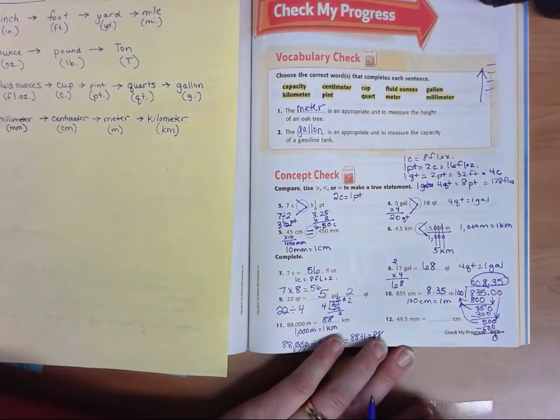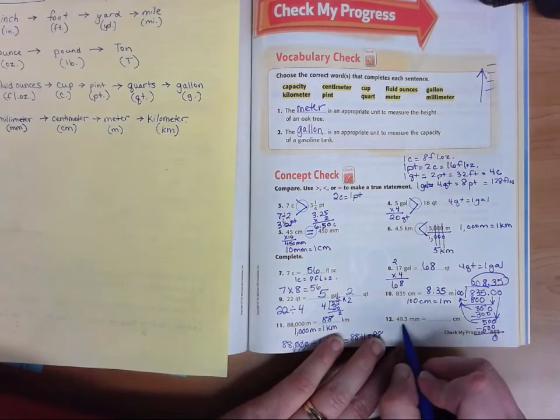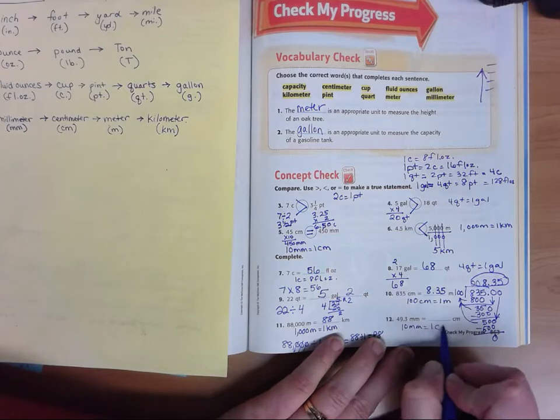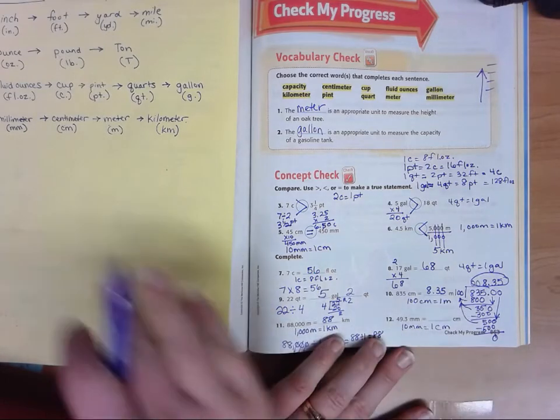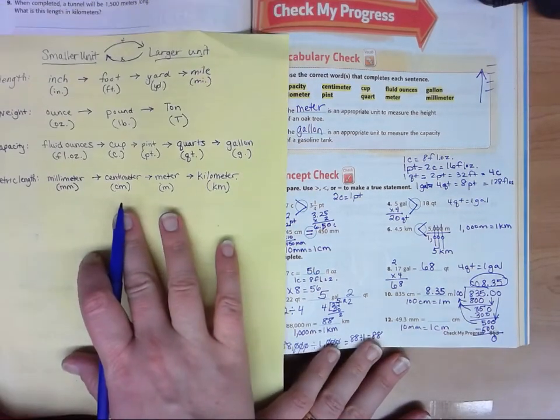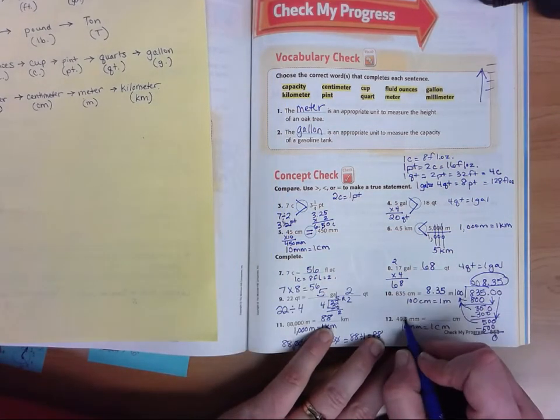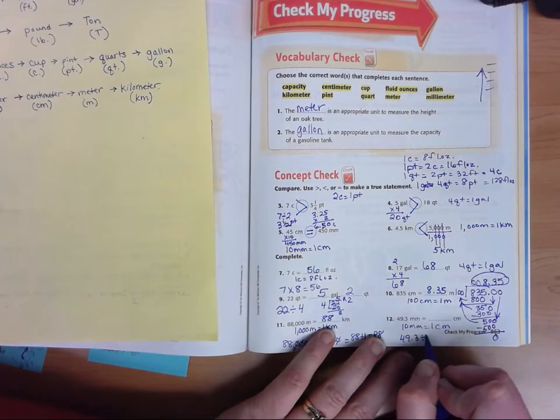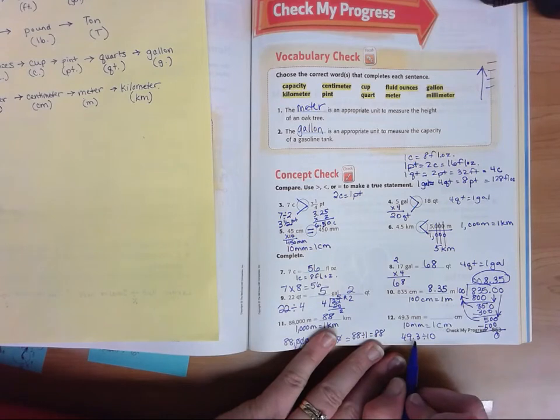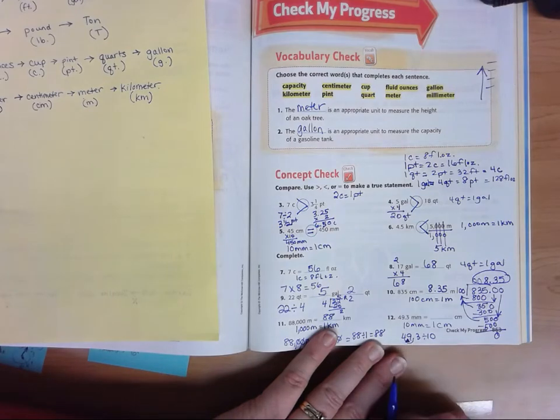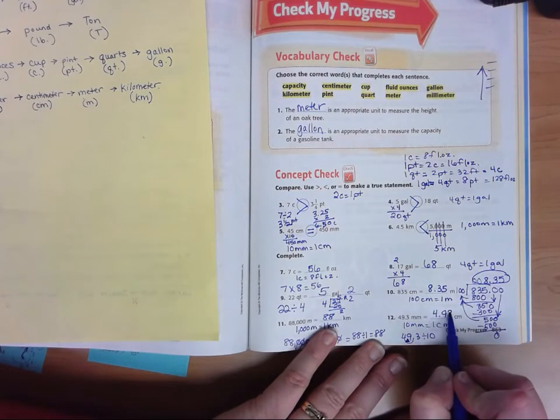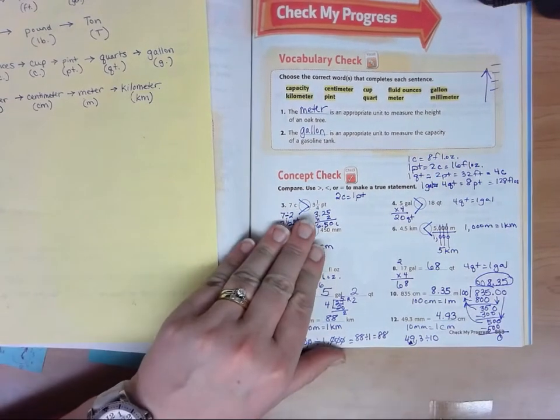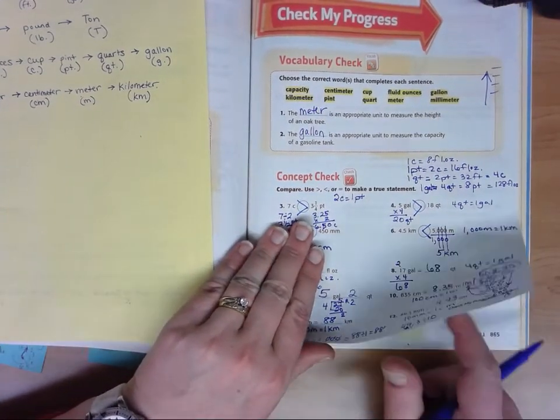49 and three tenths millimeters to centimeters. 10 millimeters in one centimeter. Millimeters little to centimeters larger, I'm going to divide. So I take 49 and three tenths divided by 10. Remember when you divide by 10, you have one zero. You can take that and shift it one place to the left. Take your decimal and shift it. So we have four and ninety three hundredth centimeters. We're trying to make that number smaller by one place value.